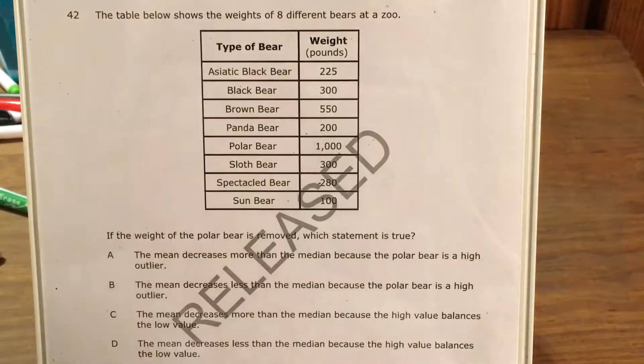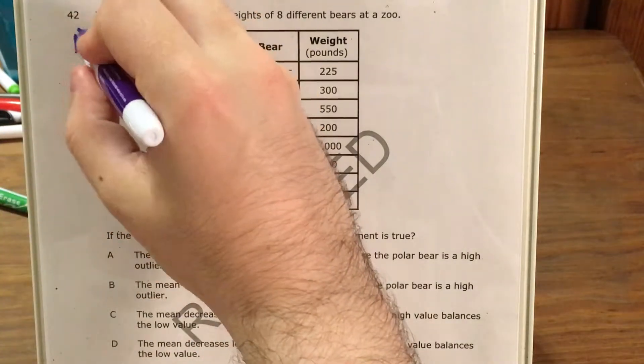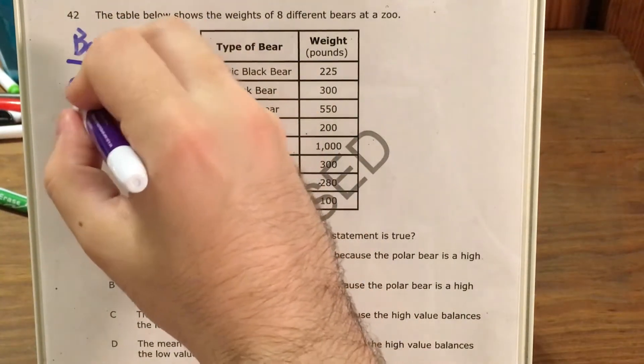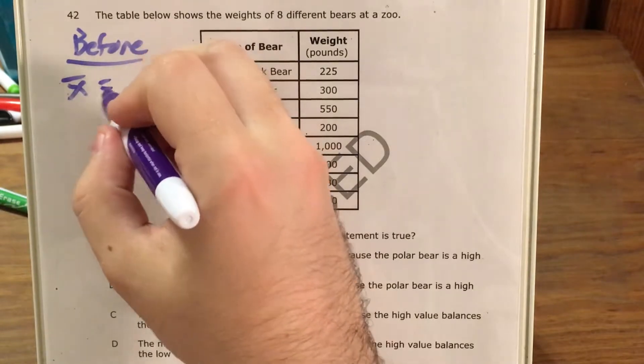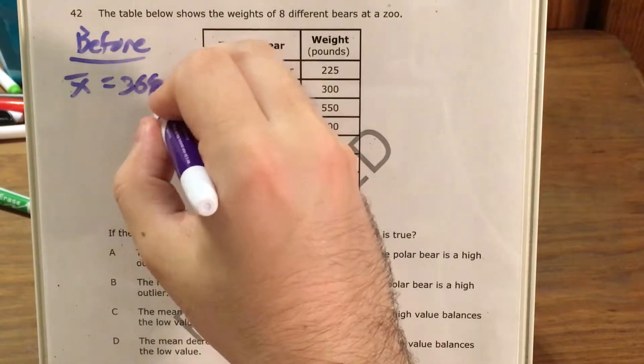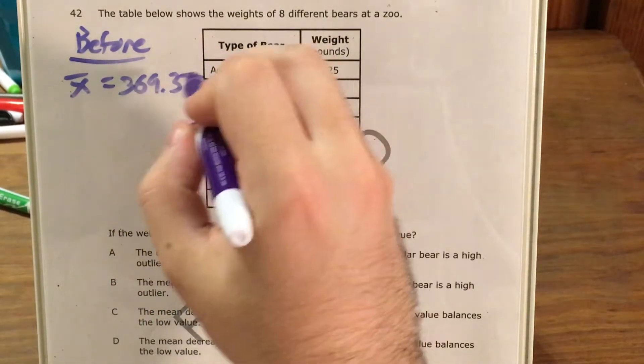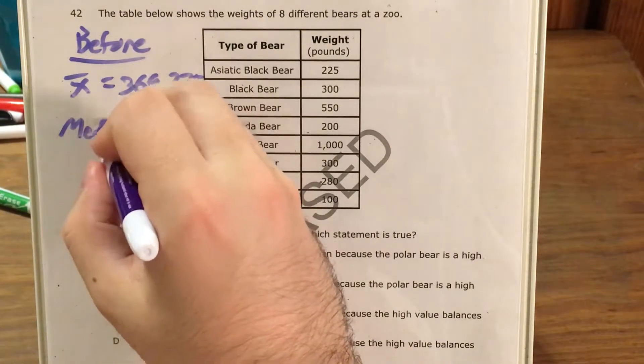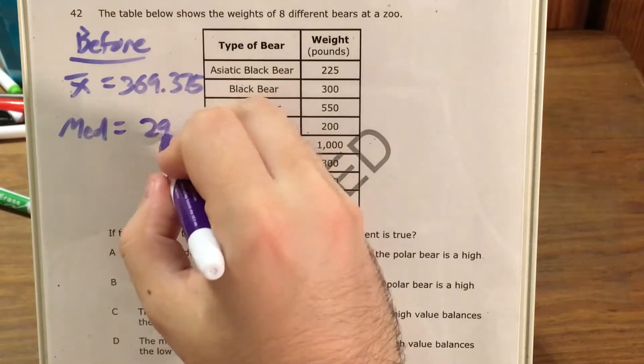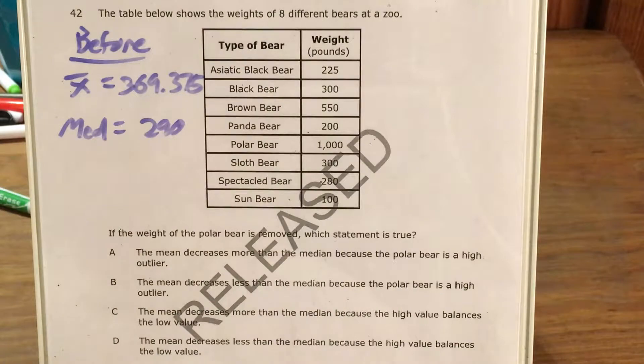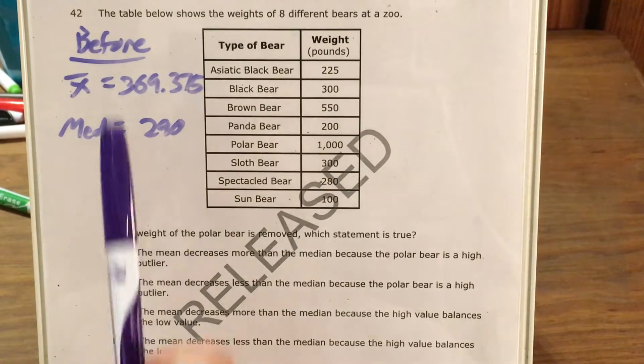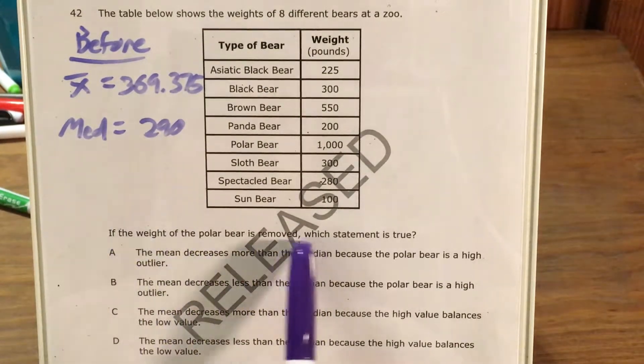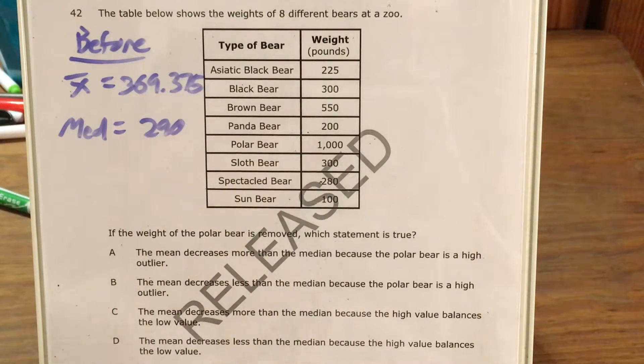So let me go ahead and write a quick statement about before. My mean or X bar is 369.375 and my median is 290. So that was before and now I need to remove the weight of the polar bear and see how that changes the data.